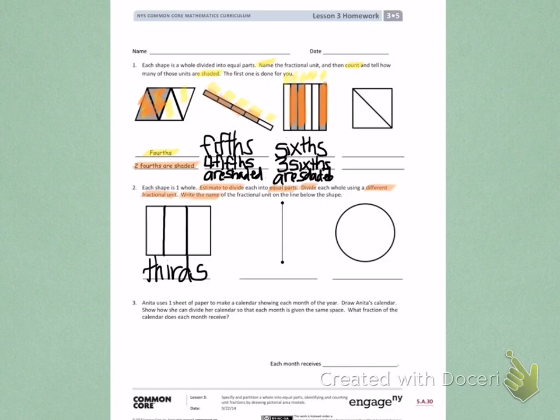Number three. Anita uses one sheet of paper to make a calendar showing each month of the year. So we're going to create a calendar that shows each month of the year. I want to draw the calendar to show each month is given the same space.